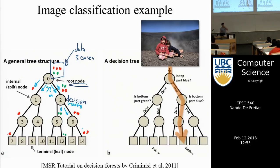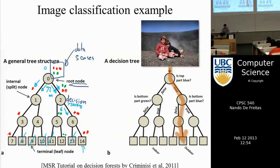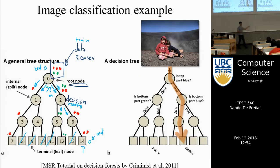Assuming you had a tree, you would split the cases as you move down it. Some leaves would be empty, but for leaves that have cases of one class, if you had a new test point you don't know the label for, you would just follow these decisions. If the test data ends up at a red leaf, you know it's red; if it ends up at a green leaf, you assign it the class green.